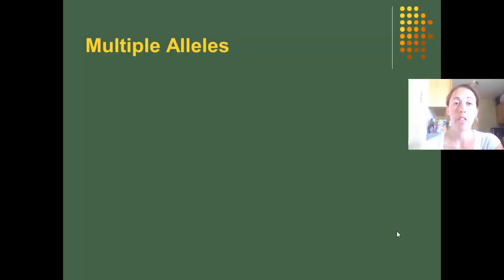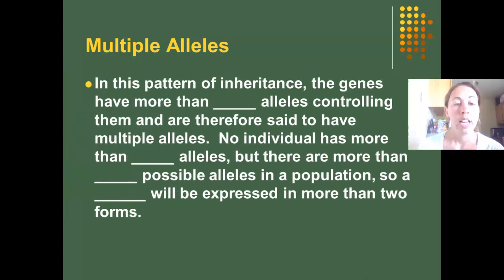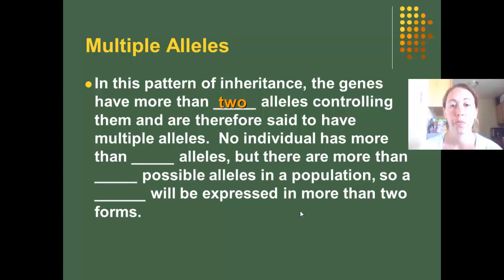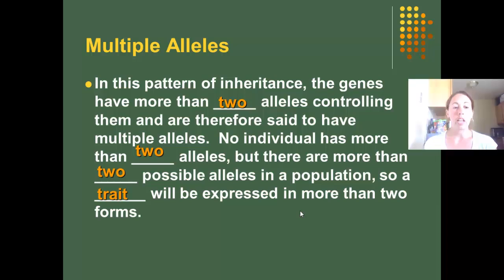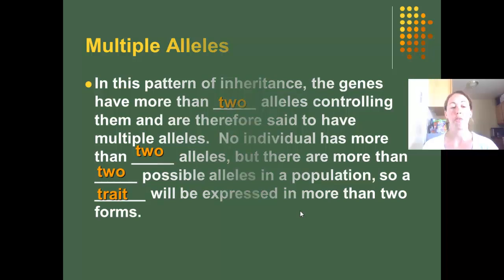Another exception to Mendel's Laws is multiple alleles. In this pattern of inheritance, genes have more than two alleles controlling them and are therefore said to have multiple alleles. No individual has more than two alleles, but there are more than two possible alleles in a population, so a trait will be expressed in more than two forms.